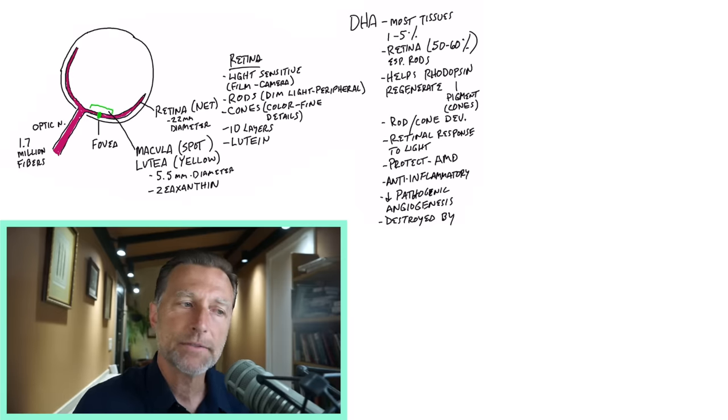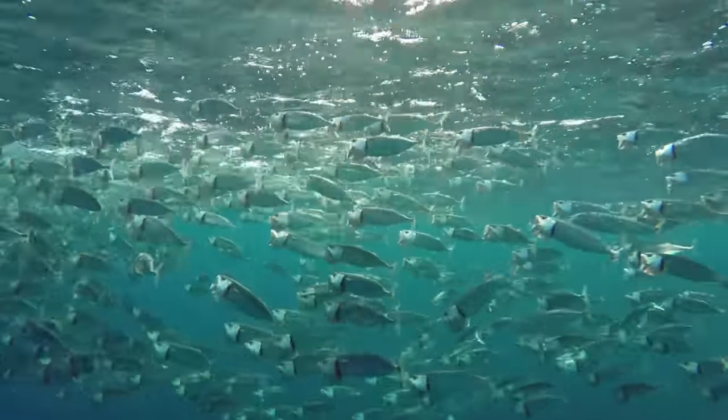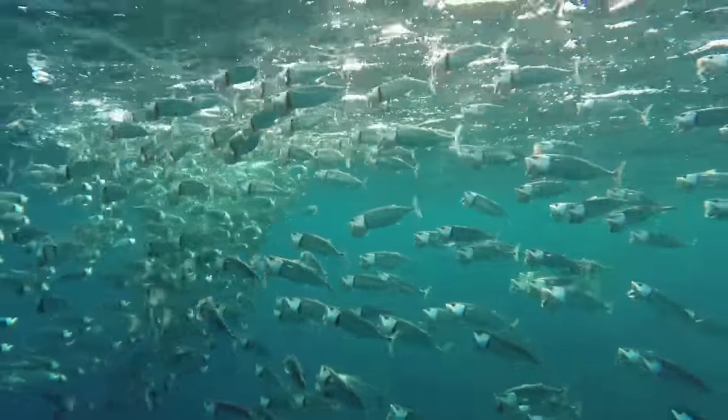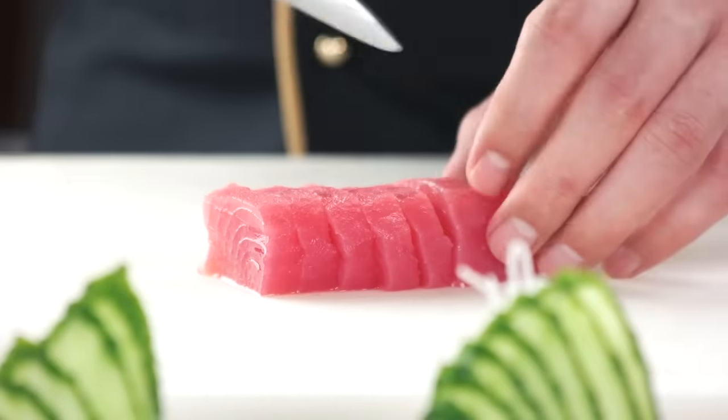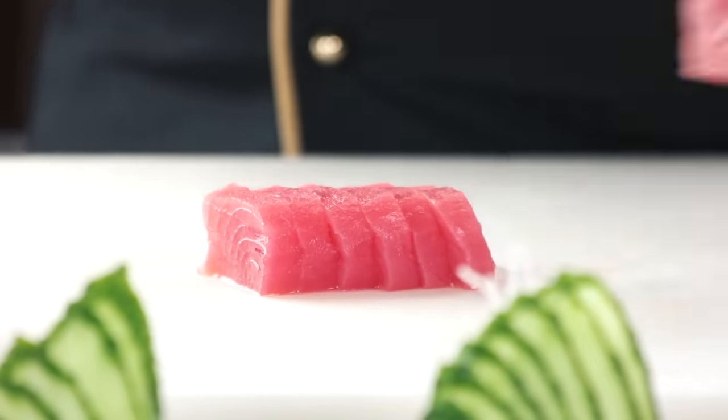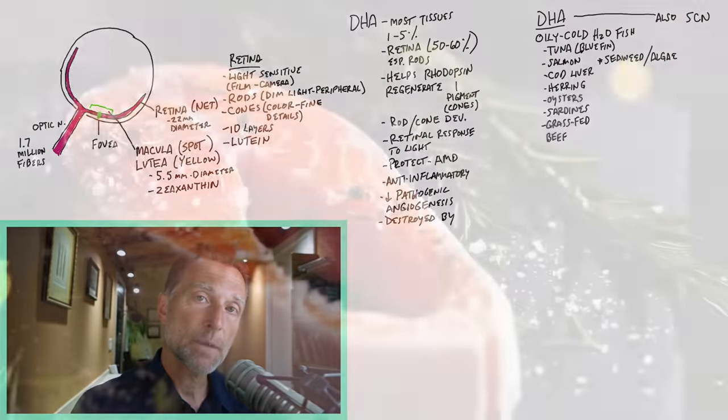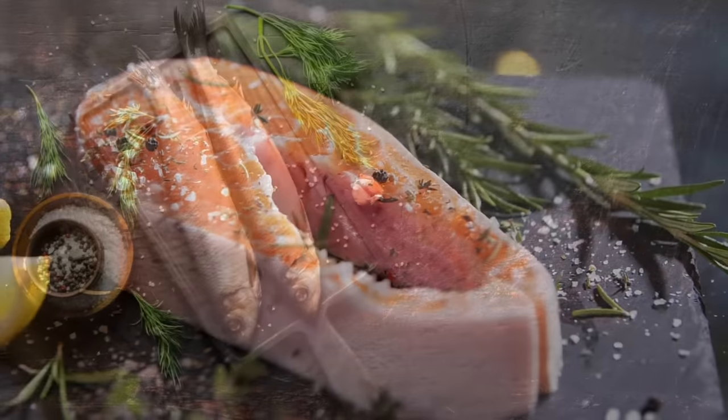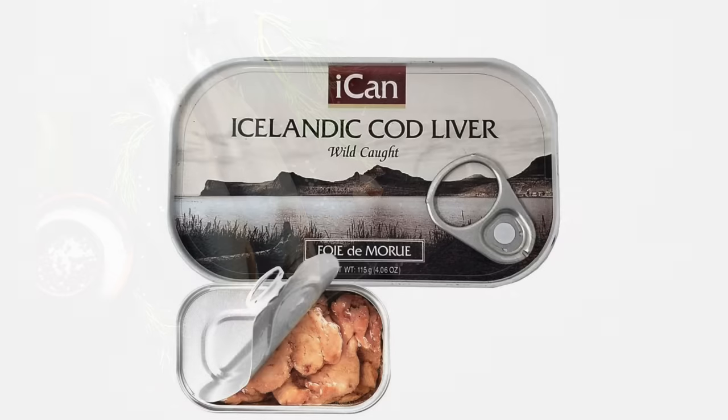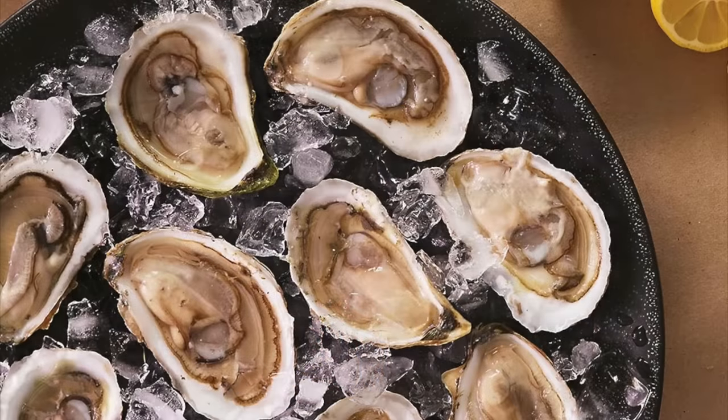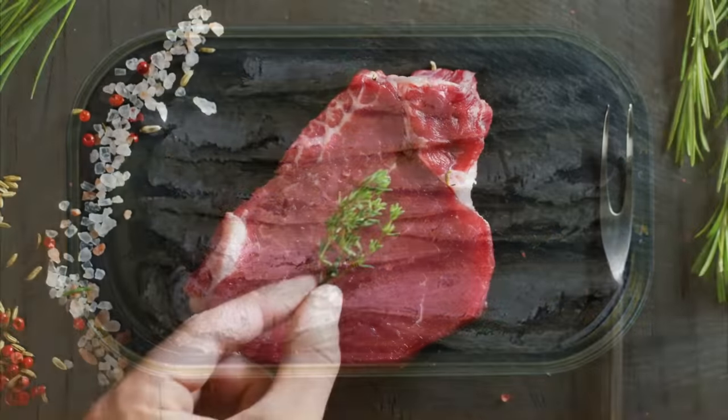Now the question is, what kind of foods make up these important nutrients? You're going to find the best source in oily, cold water fish, as in tuna, like especially bluefin. Bluefin has like five times the amount of DHA than other types of tuna. But you also have salmon, herring, cod liver, cod liver oil, oysters, sardines, and grass-fed beef.